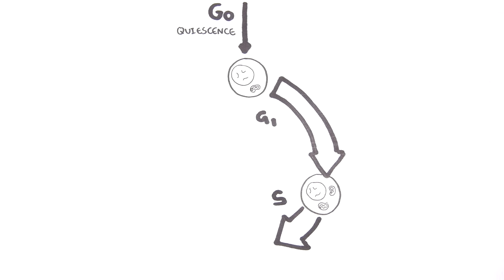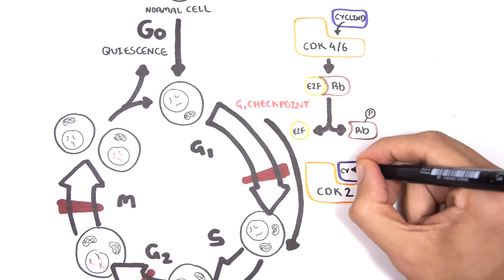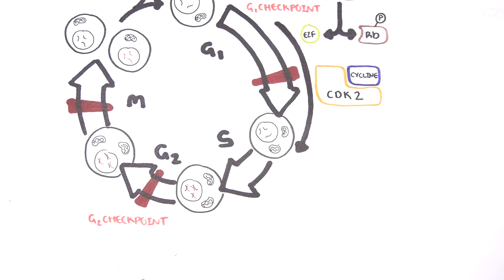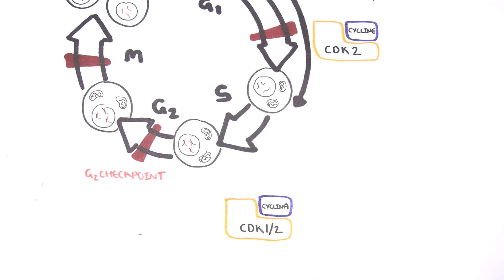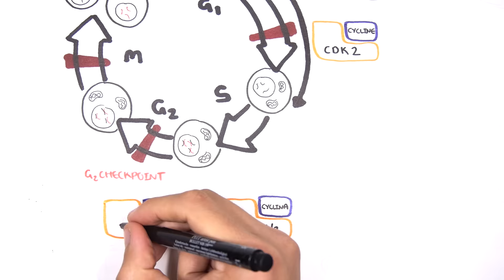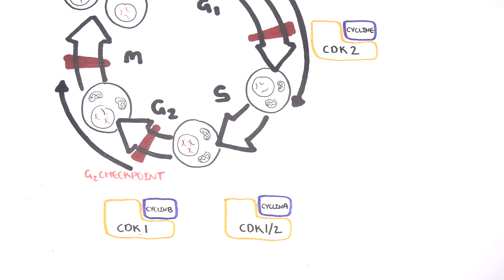This reaction causes E2F to detach from the retinoblastoma protein. When E2F is released, it acts like a transcription factor, allowing the cell to progress through to the S phase. At the end of G1, CDK2 and cyclin E are also involved. Once at the S phase, the cell produces CDK1, CDK2, and cyclin A. At the G2 phase, CDK1 and cyclin B drive progression. These CDK and cyclin combinations allow the cell to progress through the cell cycle.